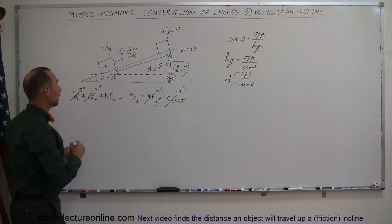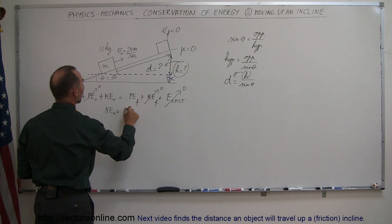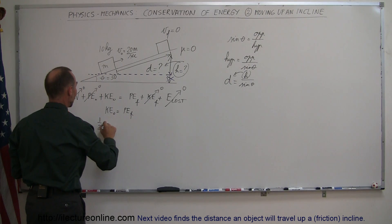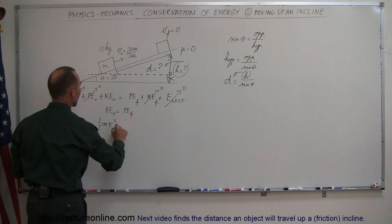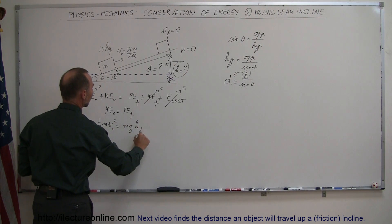And now this whole equation simply boils down to the initial kinetic energy is equal to the final potential energy. And of course the initial kinetic energy is equal to one-half mv initial squared, and the final potential energy is mgh final.